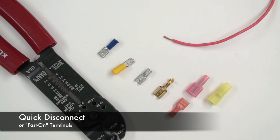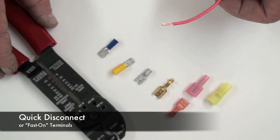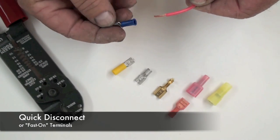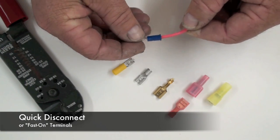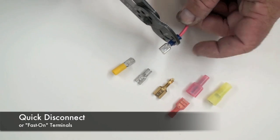To use these connectors, you simply strip off a small section of insulation from your wire. Using the crimping tool, you attach the appropriate connector, in this case a 16 gauge. Slide it over the top and crimp.